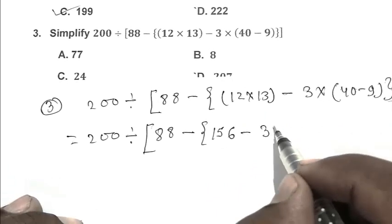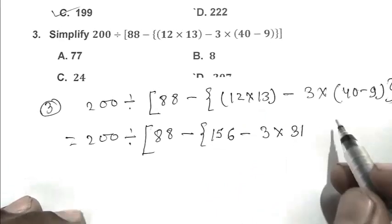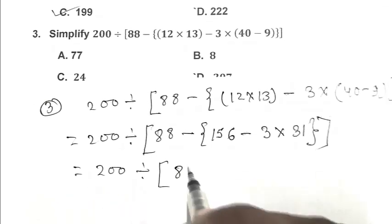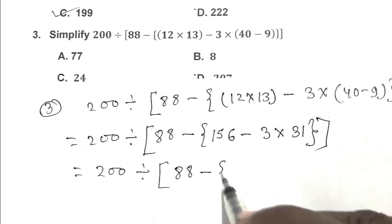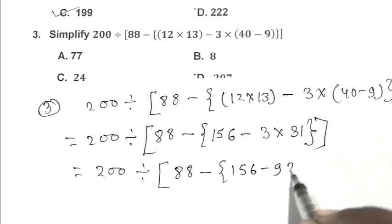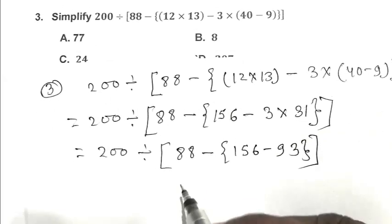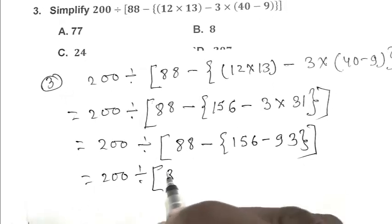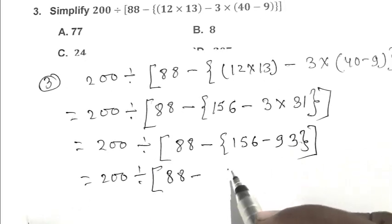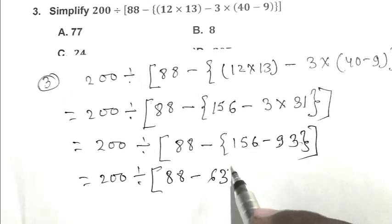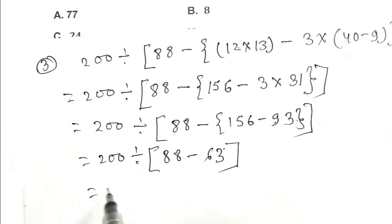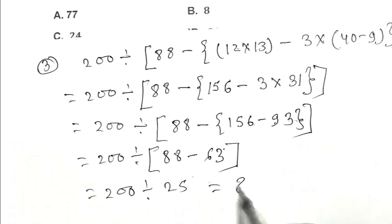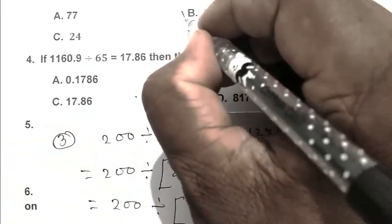It's become 156 minus 3 into 31. So 200 divided by 88 minus 156 minus 93 close. 200 divided by 88 minus 63. 200 divided by 25, that is 8. So B is the right answer.